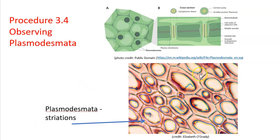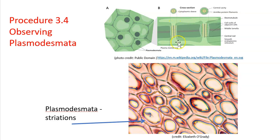Those openings between the cells are called plasmodesmata. In procedure 3.4, we're going to have you look at these plasmodesmata. When organisms are multicellular and made up of millions or billions of cells, the cells still have to be able to communicate with one another in order for the organism as a whole to maintain homeostasis. They communicate chemically, often by materials moving from one cell to another. That movement is orchestrated through these openings in the cell wall called plasmodesmata, and the cytoplasm carries those signaling or communication molecules from one cell to the next.